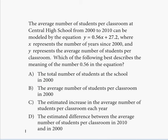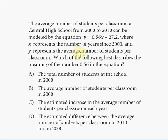Hello everyone, welcome to my free online tutorial for the new SAT math section. The problem on your screen is taken from the third practice test in the new SAT study guide released by College Board — the redesigned SAT for the exam starting March 2016. This is problem number 8, practice test 3, section 4, calculator allowed. The average number of students per classroom in Central High School from 2000 to 2010 can be modeled by the equation y = 0.56x + 27.2, where x represents the number of years since 2000 and y represents the average number of students per classroom.